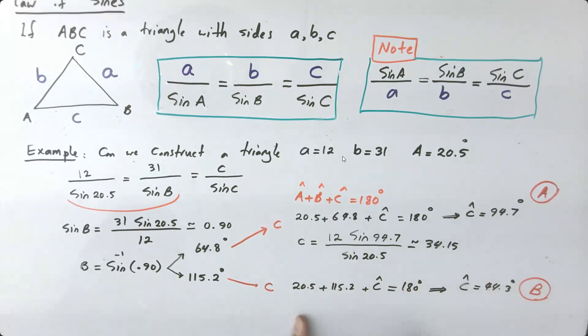However, if I use B to be 115.2 degrees, my angle C is going to be different. So length C is going to be 12 times sine of 44.3 divided by sine of 20.5. In this case, the length becomes 23.93. And as you can see, you end up having two triangles.